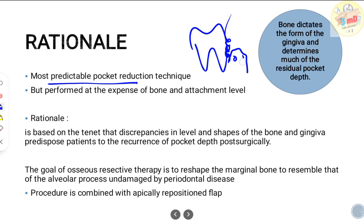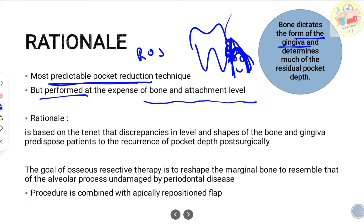If you did not correct the bone defect present, your gingiva will form pockets again, because the bone defect determines the form of gingiva. Therefore defects need to be corrected — either through regeneration or resection — to avoid the reoccurrence of pockets. Resective osseous surgery is the most predictable pocket reduction technique, but it is performed at the expense of bone and the attachment level.